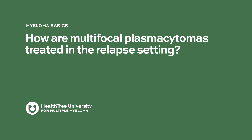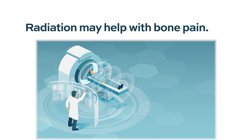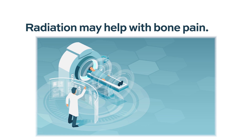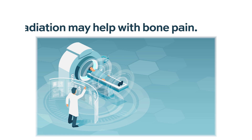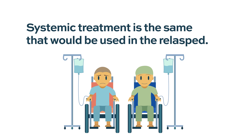In the relapse setting, you try different things, as you would for any relapsed disease. If it's causing a lot of symptoms, radiation might be indicated. If radiation is not indicated, then you use systemic treatment, and it follows the same paradigm you would use for any relapsed myeloma.